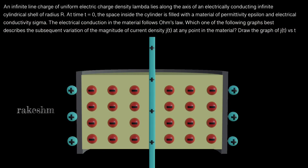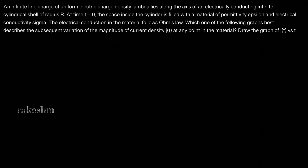Good morning dear students. Let us take a look at this question from JEE Advanced 2016. This question is from the current electricity chapter. Let us first analyze the question: an infinite line charge of uniform electric charge density lambda lies along the axis of an electrically conducting infinite cylindrical shell of radius R.